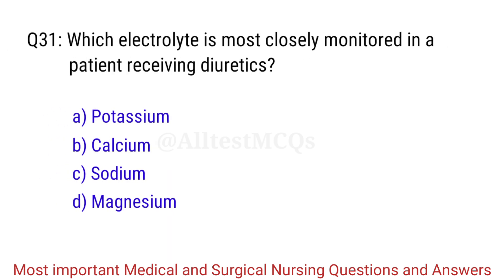Q31. Which electrolyte is most closely monitored in a patient receiving diuretics? The correct answer is Option A: Potassium.